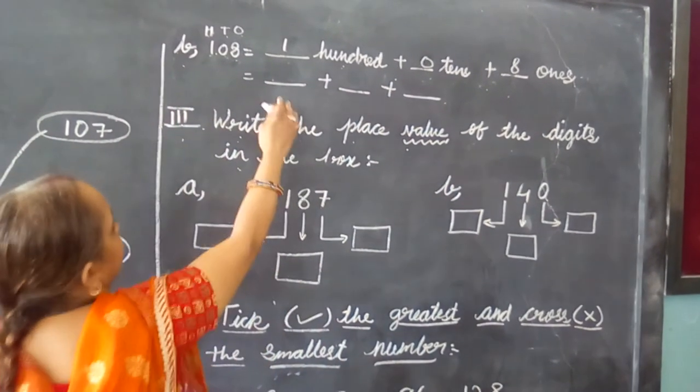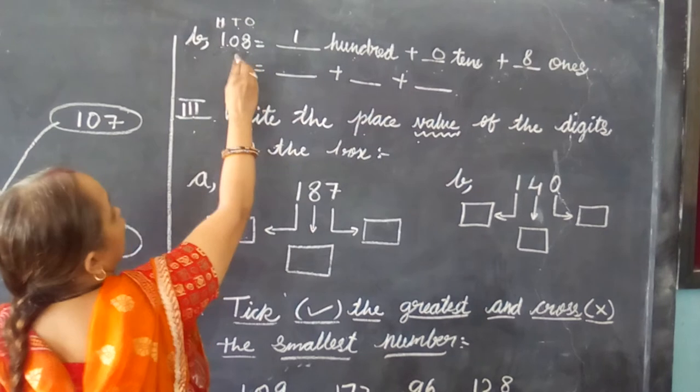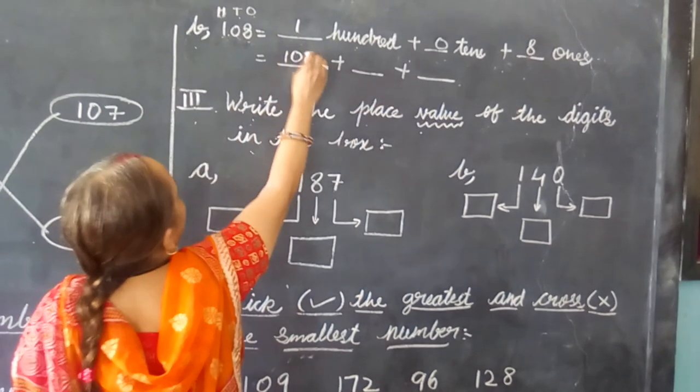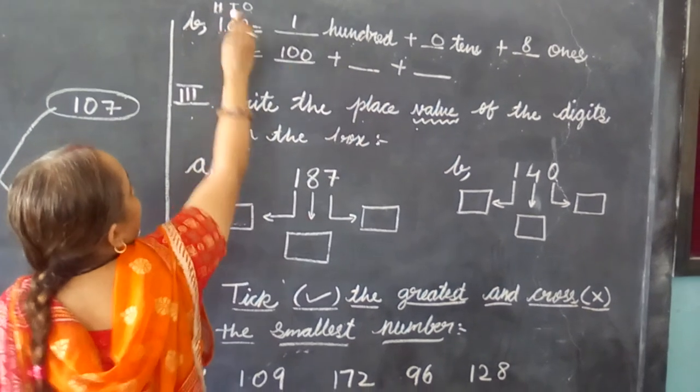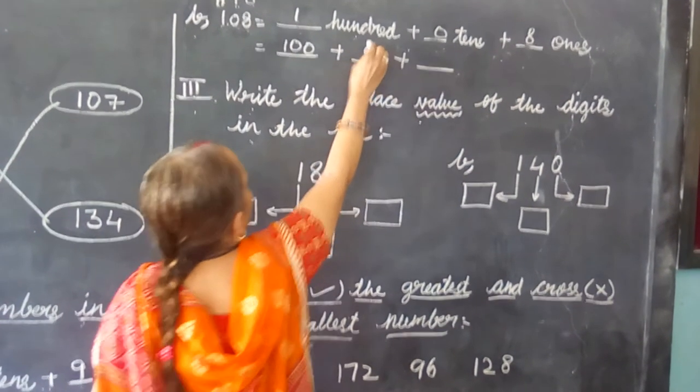Now in the next line here, in this one, we are going to write the value of the number. 1 into 100 is 100. 0 into 10, any number multiplied by 0 is 0, so we are going to write 0.